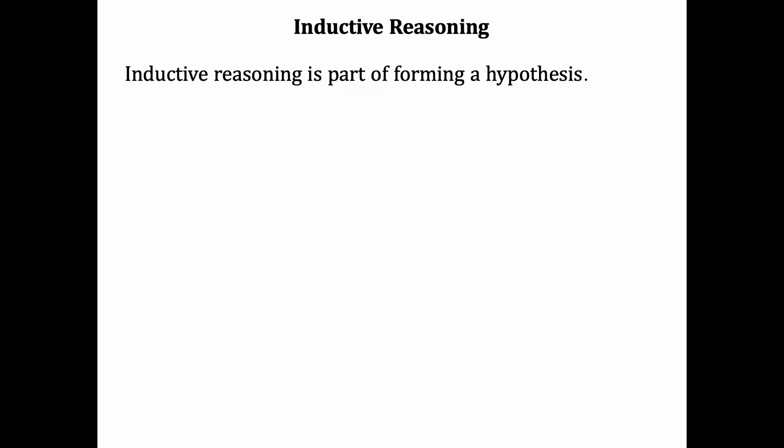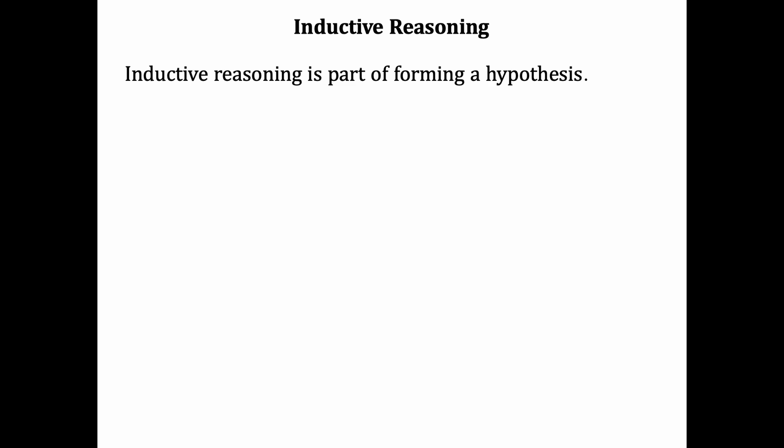Inductive reasoning is an important part of forming a hypothesis in science. Here's an example from science. Let's say it's given that a human is going to release a rock from rest above ground. And then you also observe the rock fall. We've all observed this experiment being carried out countless times, and it always went a certain way. Every time P occurred, Q followed. If the rock was released, it fell.